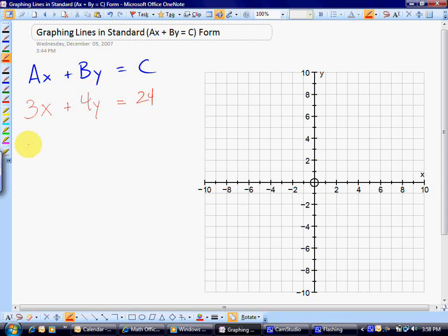To find the x-intercept in standard form, we take the c value and divide it by a. So in this case, it would be 24 divided by 3, which is 8.